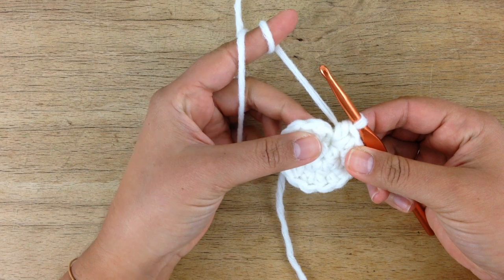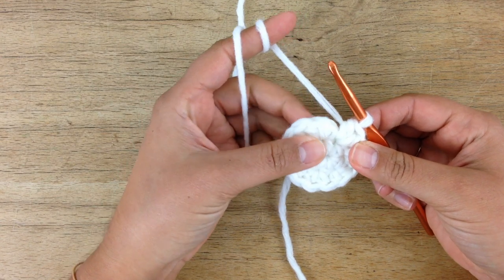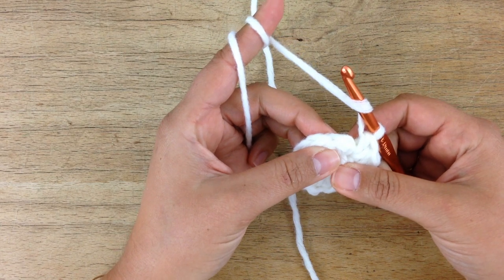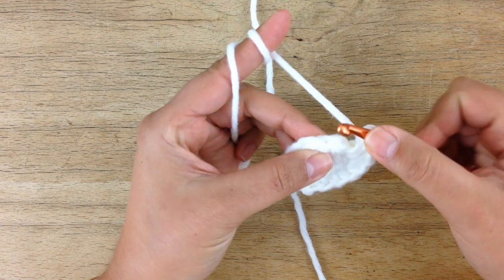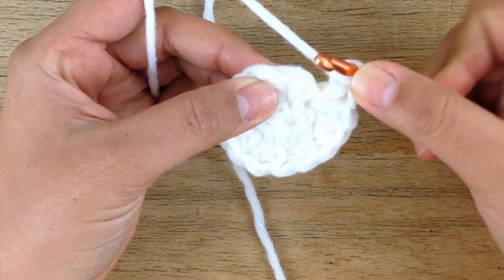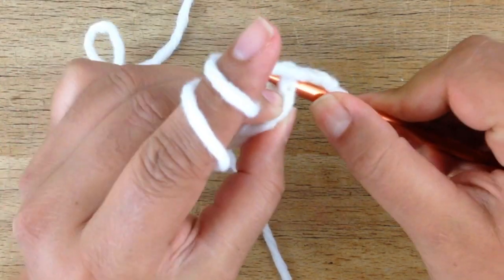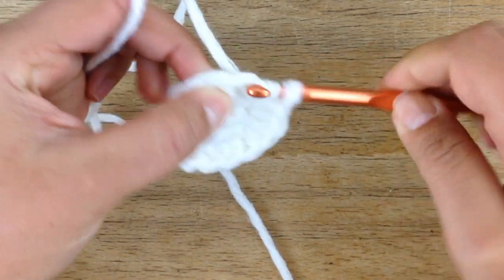So if it were unjoined rounds, you would simply work your next half double crochet into the next stitch of the previous row. Now we're in row three—this is here, it would be like that, and then the next here. This is how you do the unjoined rounds.